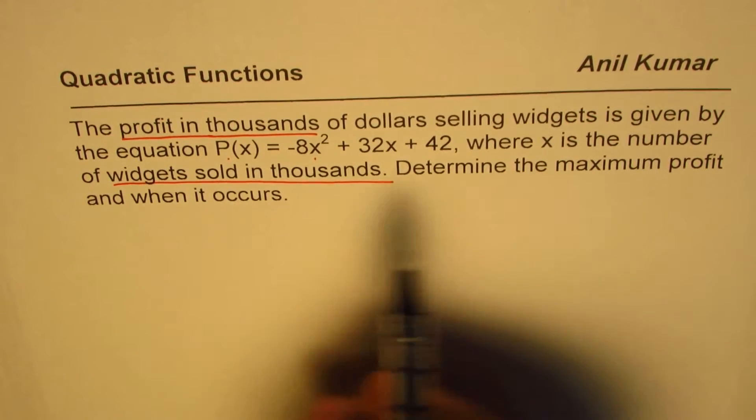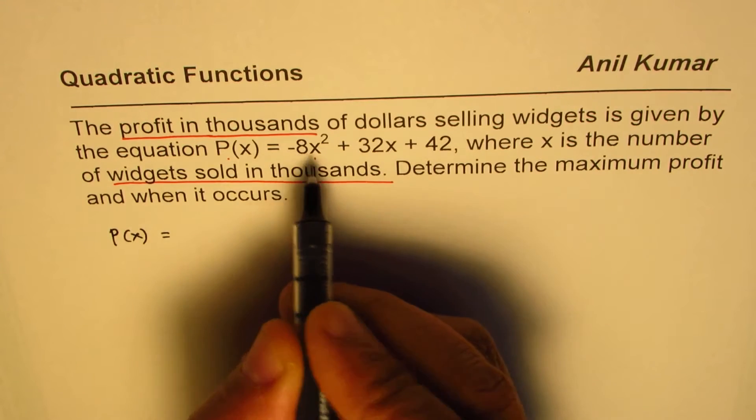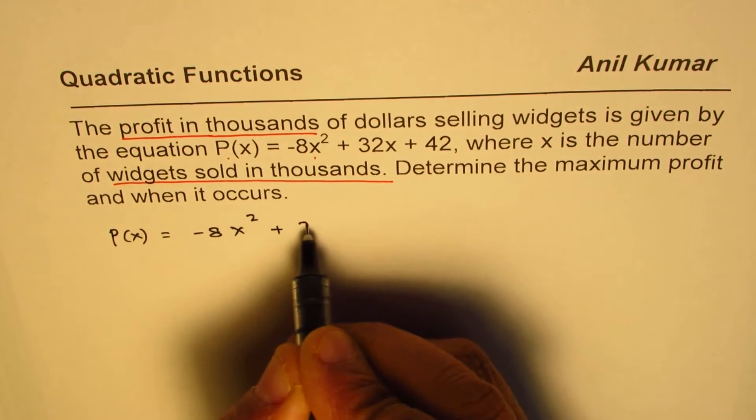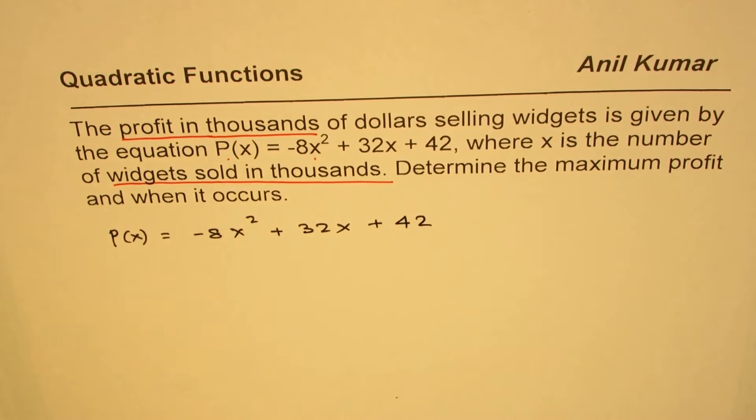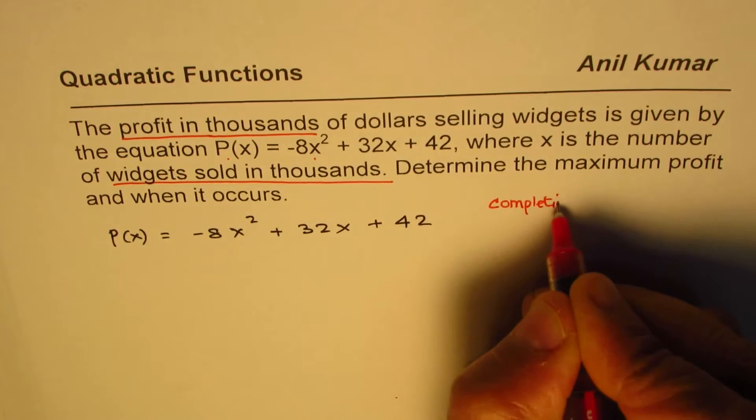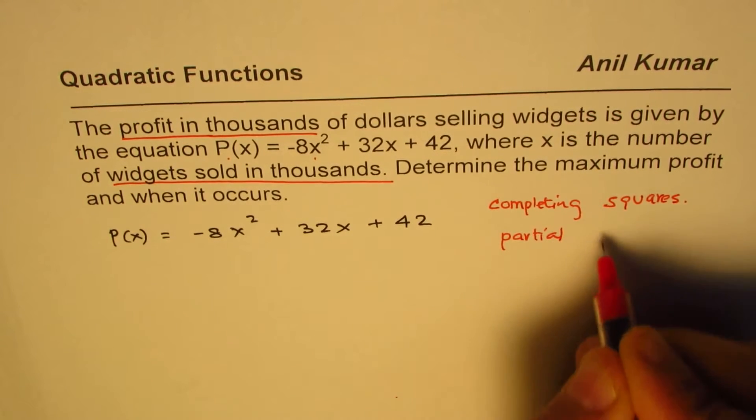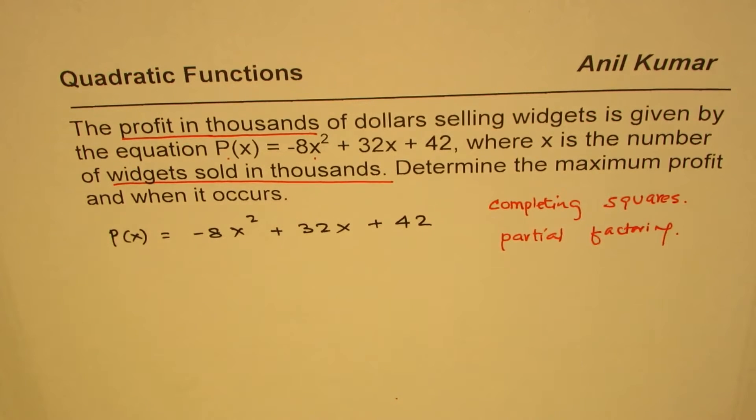Now you can actually solve the question and look into my suggestion. So finding maximum—basically this is negative means it has a maximum—you could do with many methods. Let me rewrite this question. We have minus 8x squared plus 32x plus 42. Now this equation, we can find vertex by many different ways. One of the ways is completing squares. Another way is partial factoring.